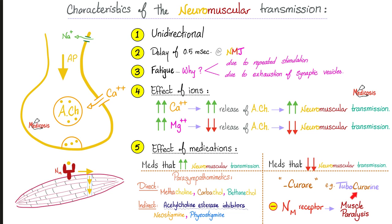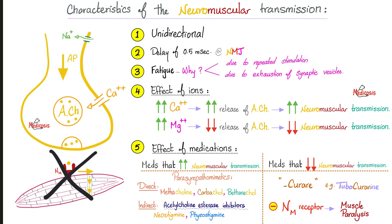A very famous exam question: curare, or any drug with the word curare in it — such as tubocurarine. It goes to the N-sub-M receptor and inhibits it, so acetylcholine cannot bind to the receptor. The muscle will not contract, and you get paralysis. This medication is used by the anesthesiologist to paralyze muscles during surgery, because if you leave your muscle to contract during surgery, it will twitch, bleed, and ruin the entire surgery.